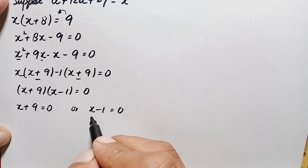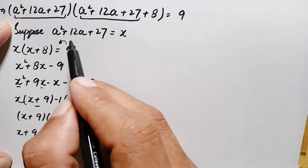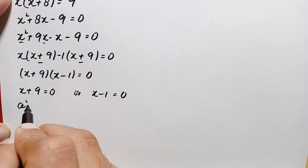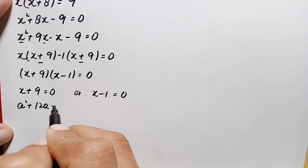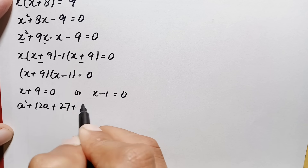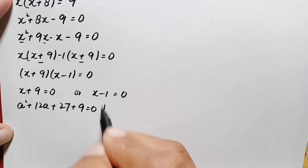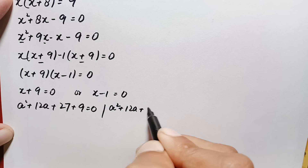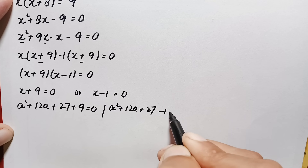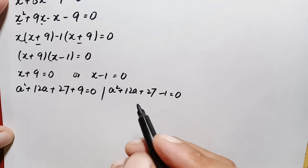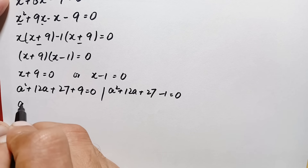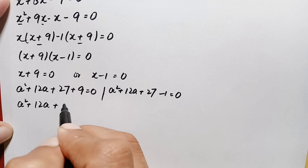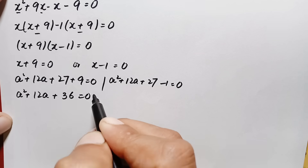Now we replace x back with a²+12a+27. The two equations become: a²+12a+27+9 = 0 and a²+12a+27−1 = 0. The first simplifies to a²+12a+36 = 0.